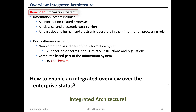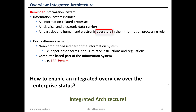A quick reminder on information systems: an information system consists of three parts. First, the processes in which information is needed, processed, and maybe also generated. Second, data carriers — classical data carriers are paper-based forms, while electronic data carriers are hard disks and databases. Third, the operators — human or electronic entities which deal with information in the processes, consuming, producing, and processing information.